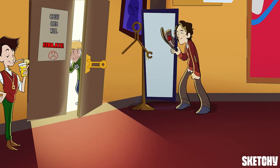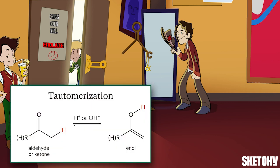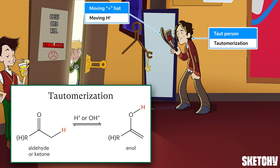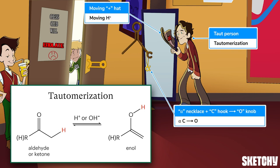By deprotonating and reprotonating an aldehyde or ketone that has alpha hydrogens, the molecule can be converted into an alternate form called an enol, which has a carbon-carbon double bond and an OH group. This occurs through a process called tautomerization, which you can remember by this tense taut fella. He's moving his plus sign hat from the alpha necklace C hook to the O knob on the carbonyl coat rack to symbolize that tautomerization occurs when the alpha hydrogen migrates up to the carbonyl oxygen.